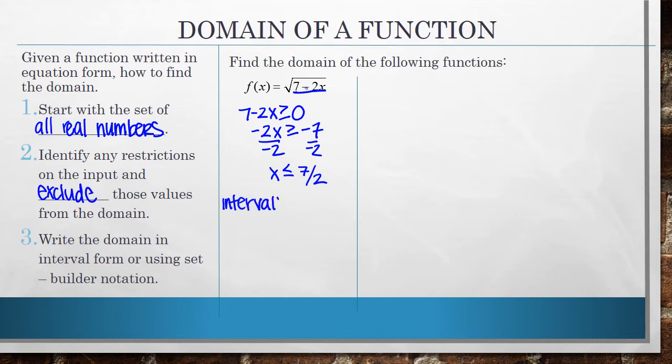So for interval notation, you always write the smallest number to the left and the largest number to the right. So for values that are less than or equal to 7 halves, the smallest value that x can take on is negative infinity - and we always use a parentheses there for infinities because we can never actually equal infinity. And then the largest values that the x's can take on is 7 halves. And we can actually equal 7 halves because of that less than or equal sign, and the way that you notate that in interval notation is by using a bracket. I do have a link to a video that reviews interval notation at the end of this video, so if you are needing to review that from previous classes, use that link.